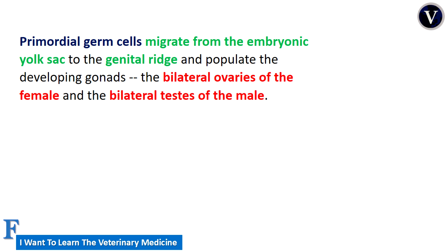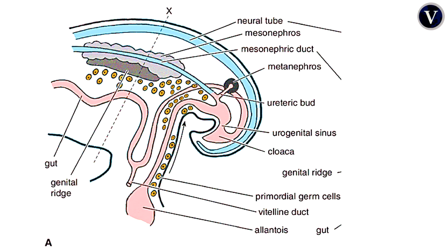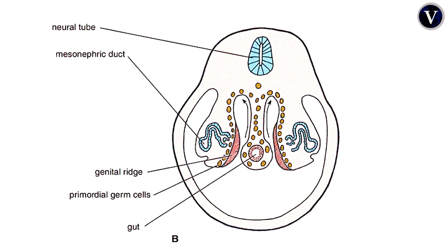Looking at the figures: in figure A you can see the migration of primordial germ cells, shown in orange, from the allantois to the genital ridge shown in gray. The other picture is a transverse section showing the migration along the dorsal mesentery.